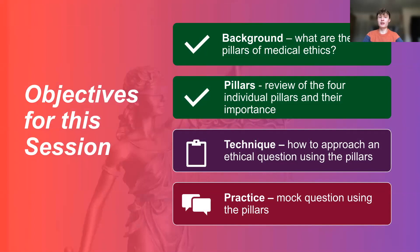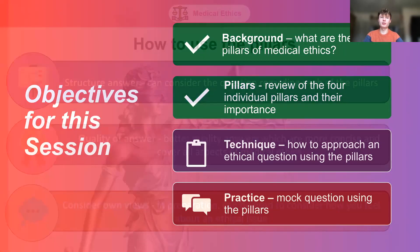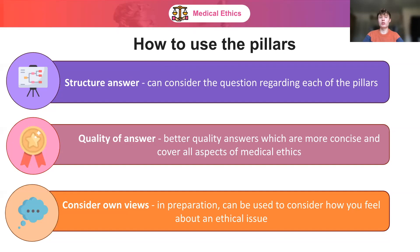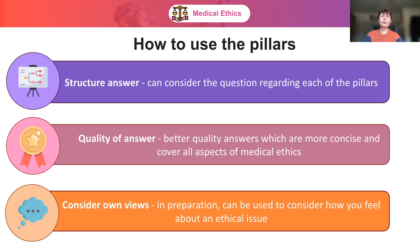Now we're going to look at how to approach an ethical question using the pillars. You can use the pillars to structure your answer by considering the question in regard to each of the four pillars — for example, a question on abortion. However, there's no need to use all four pillars in every answer. In some cases, one pillar is not as relevant as another, and forcing it could just draw out your answer unnecessarily. You don't have to use all of them, but they're a very useful way to structure your argument.